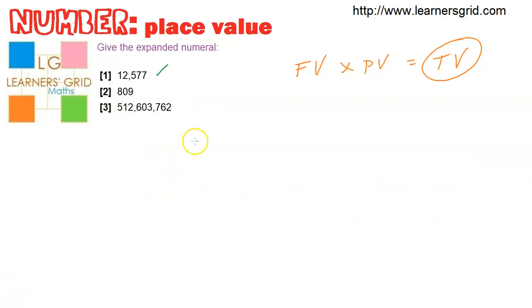Number two, we'll go about doing this the same way. So we start with eight hundred and nine. Let's go with eight. That's the face value, multiplied by its place value, which is the hundreds. And then we have zero, so we don't need to do anything. And we're up to nine. And it's in the ones column.